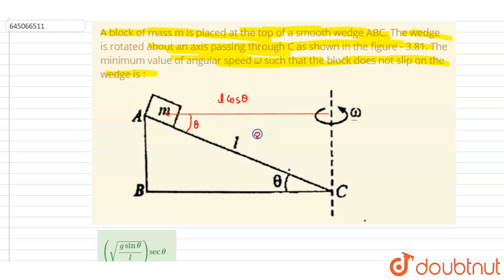and let's say there is an observer on this frame, you can see here the centrifugal force on the block will act away from the center direction like this, and it will be m omega square r. This will act away from the center. Now mg will also act here in downward direction like this.